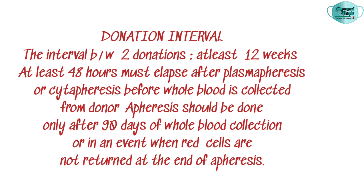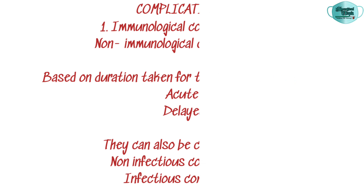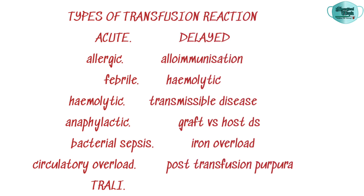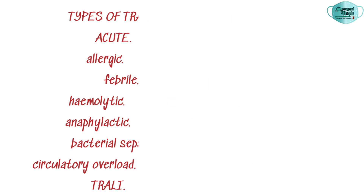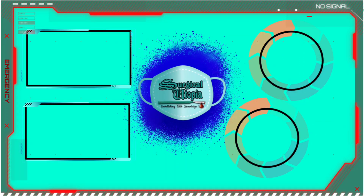Complications of blood transfusion include immunological and non-immunological complications, and can be divided into acute and delayed, as well as infectious and non-infectious types. Acute transfusion reactions may be allergic, febrile, hemolytic, anaphylactic, bacterial contamination, circulatory overload, or transfusion-related acute lung injury. Delayed reactions include alloimmunization, hemolytic reactions, transmissible diseases, graft versus host disease, iron overload, or post-transfusion purpura. In the next video, we will discuss history taking for donor selection and the different components of blood used for transfusion.